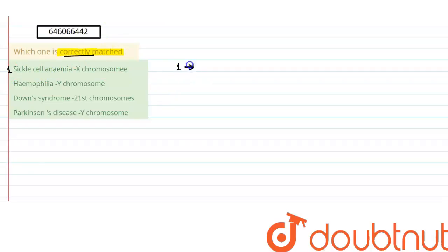With the first one, it says that sickle cell anemia is related to X chromosome, but this is wrong. Sickle cell anemia is an autosomal recessive disorder, it is not sex-linked, and the chromosome which is involved in this disorder is chromosome number 11.